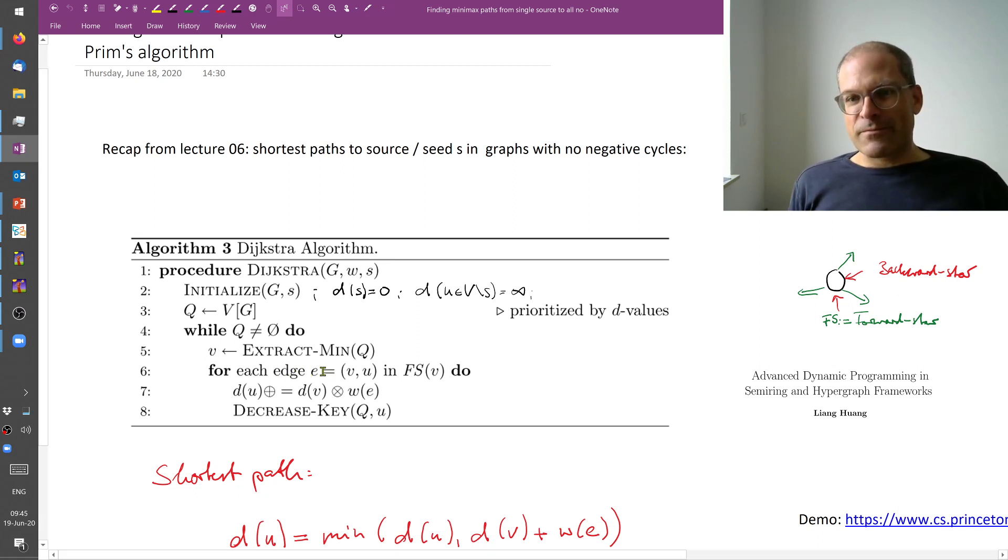And now we look at the forward star FS of this node v. So this is the node v and the forward star. These are just all the nodes which are connected by edges from v to u. So this is meant here for a directed graph. In an undirected graph, each neighbor would be in the forward star.